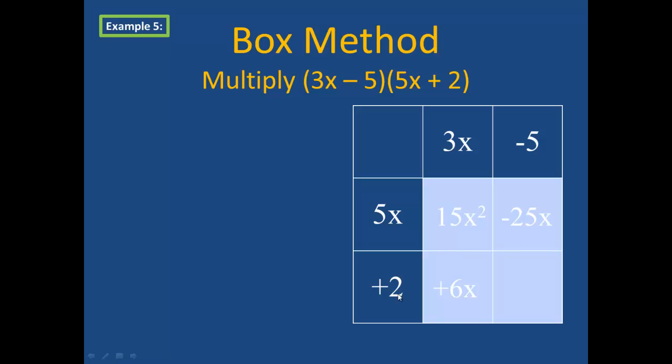And lastly, 2 times negative 5 to get negative 10. Once I have all four terms, then I have to remember to combine like terms. My like terms in this case are 6x and negative 25x. So my final resulting expression is 15x squared minus 19x minus 10.